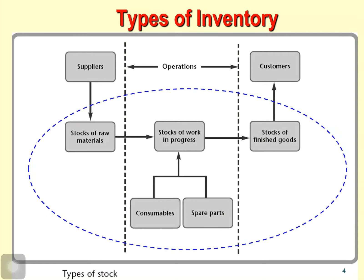How many types of inventory do we consider? Normally we separate inventory into three main forms. The first one is raw material inventory. The second one is work-in-process inventory. And the last one is finished product inventory.